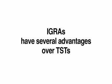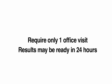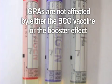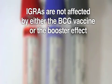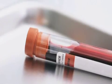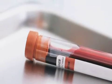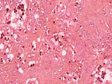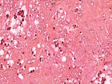IGRAs have several advantages over TSTs. They require only one office visit, and results may be ready in 24 hours. IGRAs are easier to interpret and are not affected by either the BCG vaccine or the booster effect. However, IGRAs have some limitations. The blood sample must be processed within 8 to 30 hours. Also, there's limited data about the test in children younger than 5, people who are immunocompromised, and those who are tested repeatedly. Results are reported as positive, negative, or indeterminate, and are also given quantitatively.